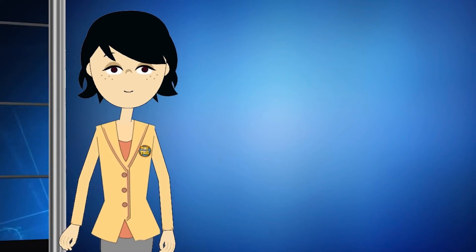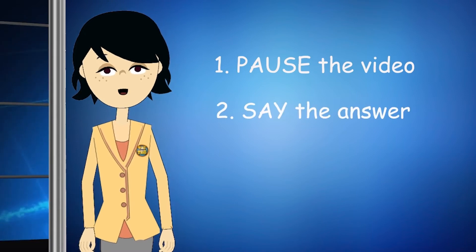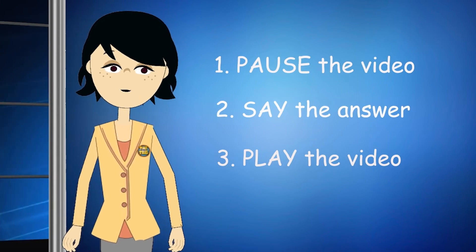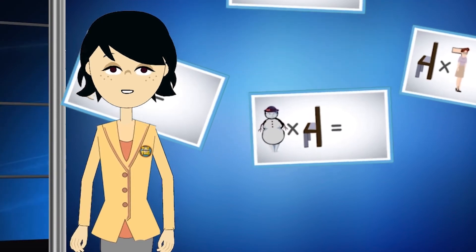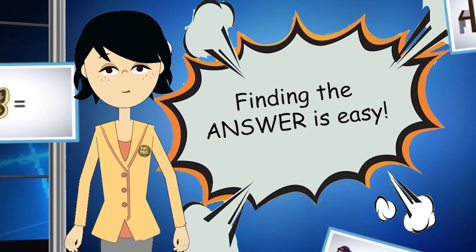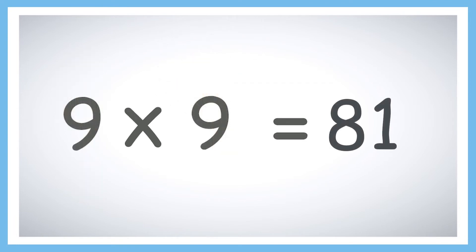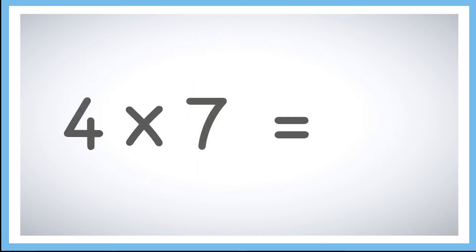Now it's your turn to try the flashcards. When you hear this sound, pause the video and say the answer to the flashcard out loud, then hit play to see if you got it right. All you have to do is think of the story that goes with the two characters. The answer is hiding in the story, and since you know the story, you know the answer! Let's begin! Nine times nine — eighty-one. Four times seven — twenty-eight.